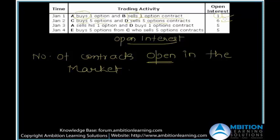Now pay attention to the third scenario, which may be a little confusing. A, who was in a buy position, sells his one option — so from buyer he becomes seller and is squaring up his position. D, who was seller of five options, buys one contract back, squaring up one position as well. A and D are each squaring up one position, so one contract is removed from the market and the open interest drops to five.